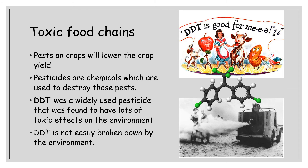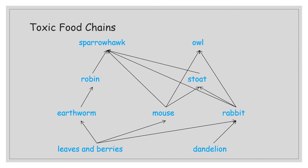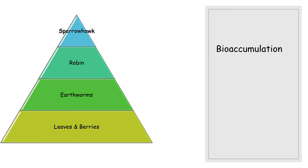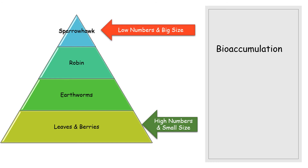One of the problems is that DDT is not easily broken down by the environment, so it persists within food chains. Here's an example food chain: leaves and berries to earthworm to robin to sparrowhawk, with another branch through rabbit to sparrowhawk. In a pyramid of numbers, leaves and berries have high numbers, while the sparrowhawk at the top has low numbers but a large size, meaning it eats many robins, which eat many earthworms, which eat many leaves.